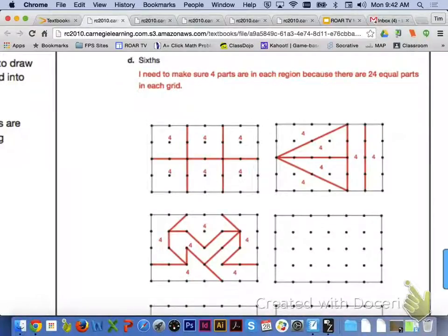For letter D, sixths, you need to make sure that you have four parts in each region, because there are 24 equal parts in each grid.